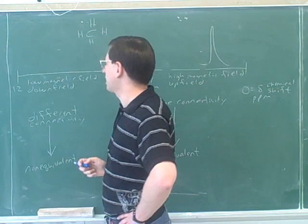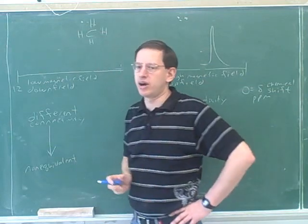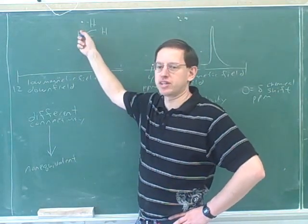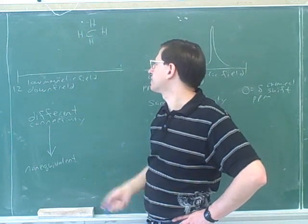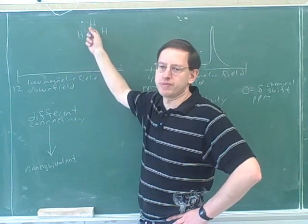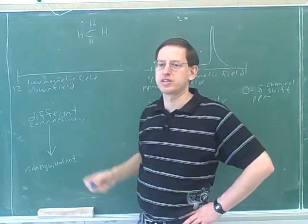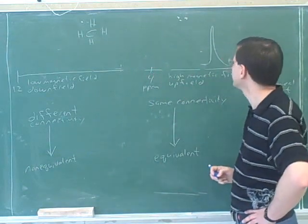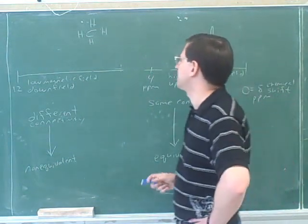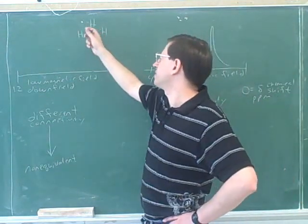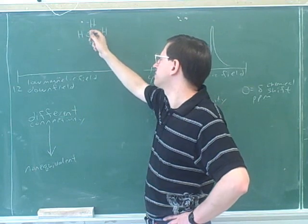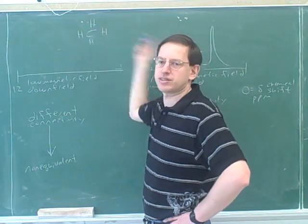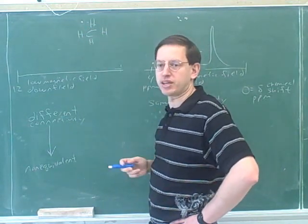Remember, we're focusing on proton NMR — the absorptions by the hydrogens. We're not focusing on carbon absorptions; that would be a different type of NMR. Since there are four hydrogens here, there's only one set of equivalent hydrogens, so you get one peak.